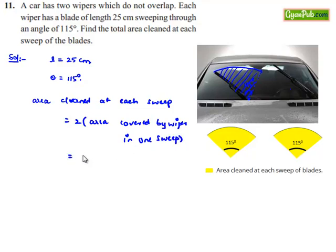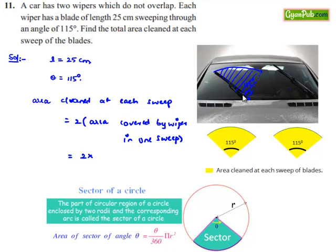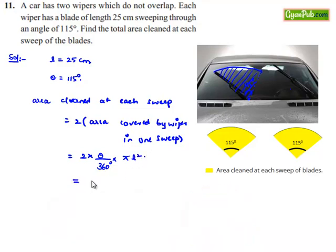That is equal to 2 times, as the area swept by the wiper is this sector and it is subtending angle theta at the starting point, the formula of area will be theta by 360 degrees into pi. The radius is now the length of the wiper, that is l squared. That is equal to 2 times theta, here is 115 degrees, divided by 360 degrees into pi, value is 22 by 7, and l squared is 25 squared.